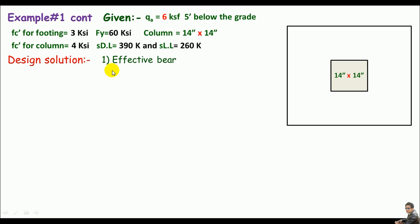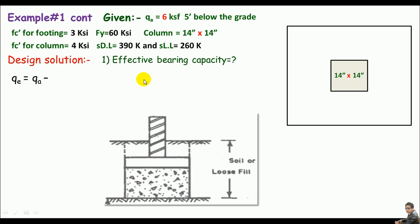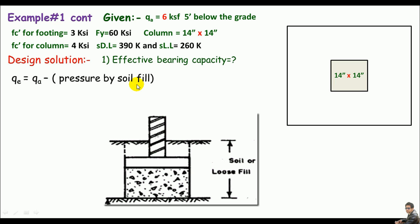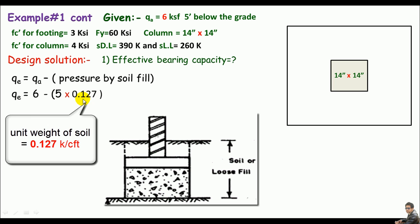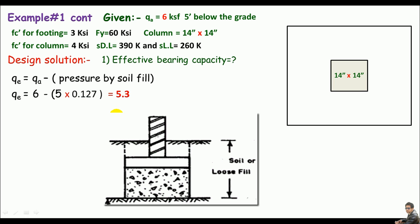The first step is effective bearing capacity calculation. The effective bearing capacity equals the allowable bearing capacity minus the pressure by soil fill. So: q_eff = 6 ksf minus the unit weight of soil times depth. Using an average unit weight of 0.1127 kcf times 5 feet, we get q_eff = 5.365 kips per square foot.